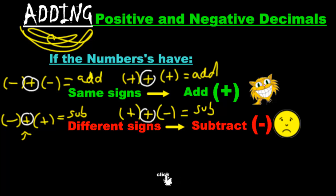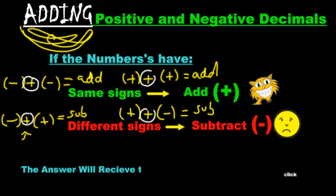Now the last thing you have to understand is this: you look at those two numbers and whichever number is bigger — ignore the signs, just look at the numbers — whichever number is bigger, the sign beside that number will move on to the answer. Let's do some practice.